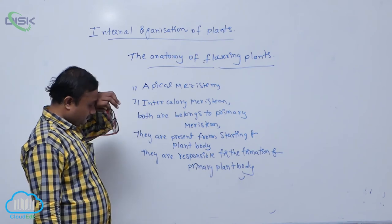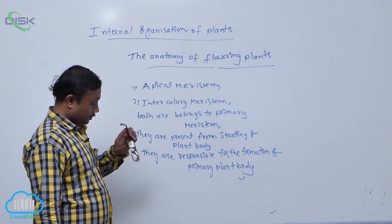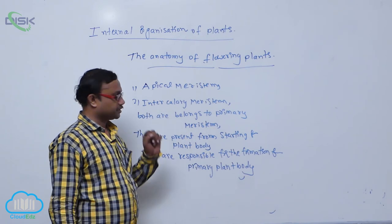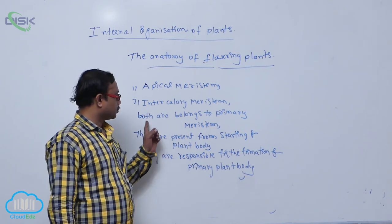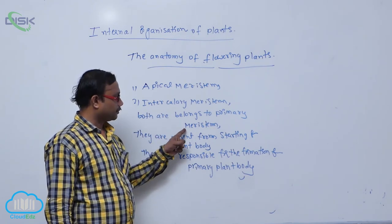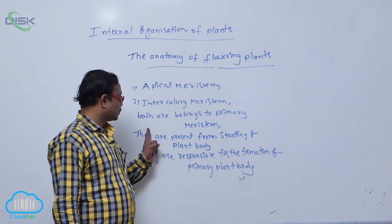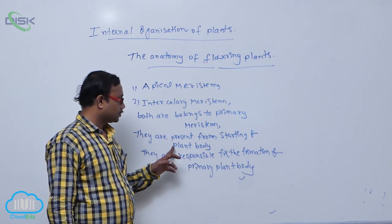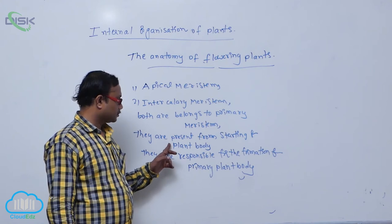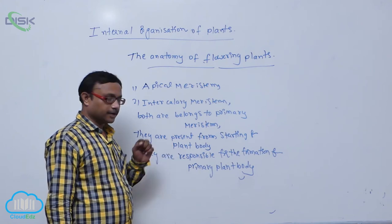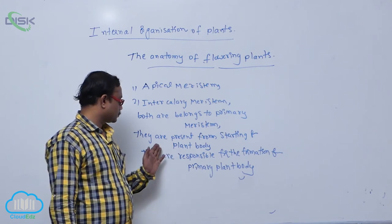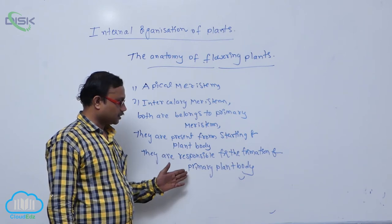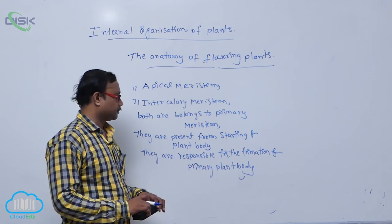Apical meristem and intercalary meristem both belong to primary meristem. They are present from the starting of the plant body and are responsible for the formation of the primary plant body.